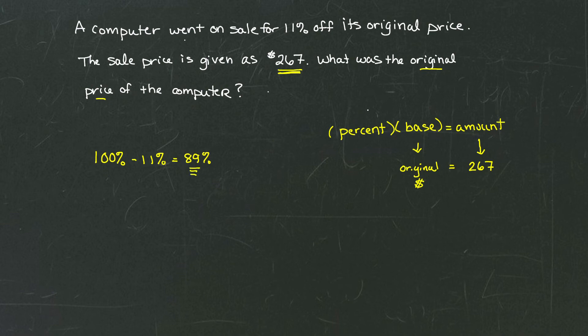This percentage, 89% here, is the one that we're going to use in our percent equation. 89% of the original price is $267. That makes sense.